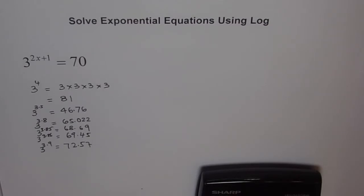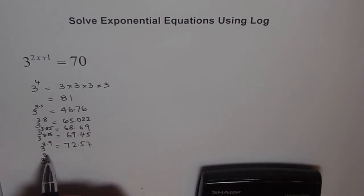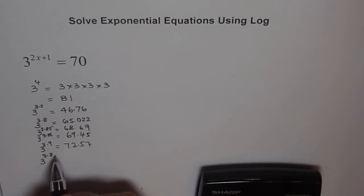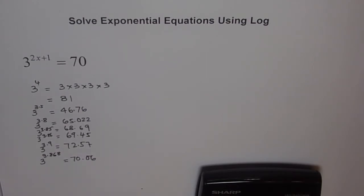3 to the power of 3.868 gives 70.06. We have to stop somewhere, so let's say this is our final answer. 3 to the power of 3.868 gives us approximately 70.06. That's very close. It really depends on what accuracy you want.